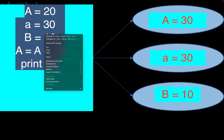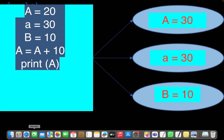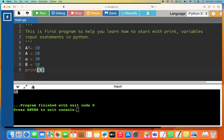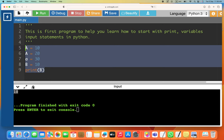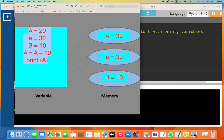This statement 'a = a + 10' does nothing to lowercase a or b — it only adds 10 to capital A, which was 20, making it 30. Let's run it: paste the code, run it, and it prints 30.